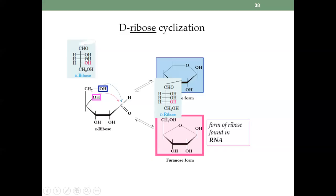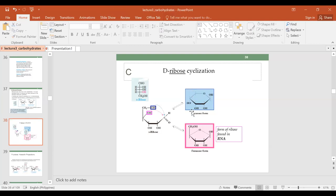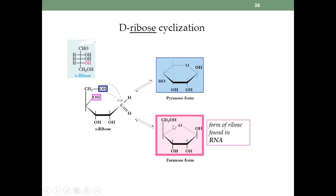This is your ribose — all the OH groups are on the right side. You have carbon 1, carbon 2, carbon 3 — the OH is down or to the right. You can see here there are two ways for the cyclic ring to be formed. If you use the OH on the fifth carbon, you can form a six-membered ring, the pyranose. Or you can use the OH on the fourth carbon to attack the carbonyl carbon.